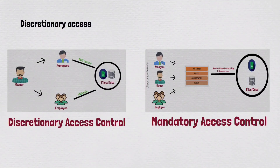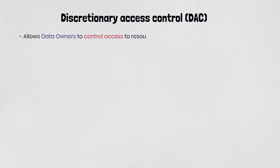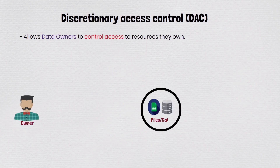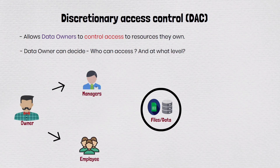Discretionary access control cannot override mandatory access control. Let's understand. First we need to understand what is discretionary access control. Discretionary access control allows a user to control access to resources they own. The owner can decide who can access their resources and what level of access they can have, like editing, copying, or read only.